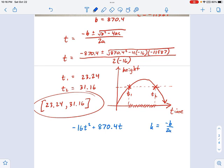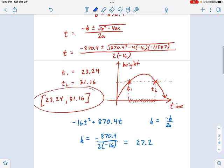B is 870.4. So let's plug some things in. H equals negative B, 870.4, divided by 2A. And A is negative 16. So when you plug this in, we're going to get something like 27.2. So that's H.